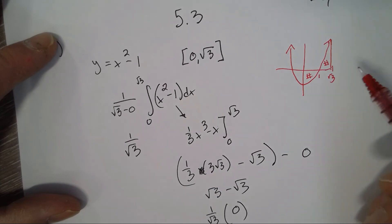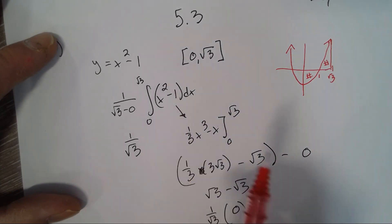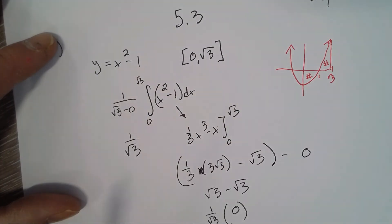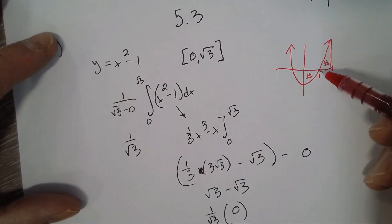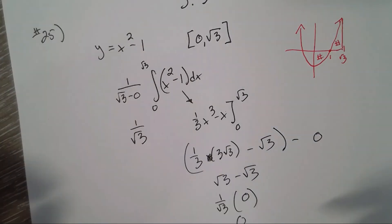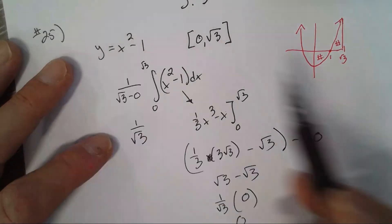Okay, so when does the function itself equal the average? Well, I just drew it, it's going to equal 0 right at 1, just based off my sketch. But usually you would have to set your function, which is x squared minus 1, equal to our average which is 0.